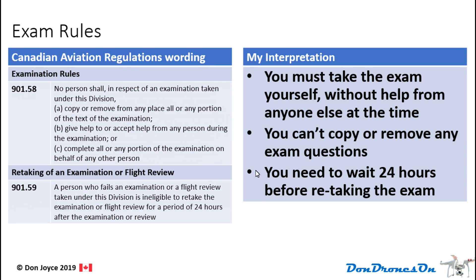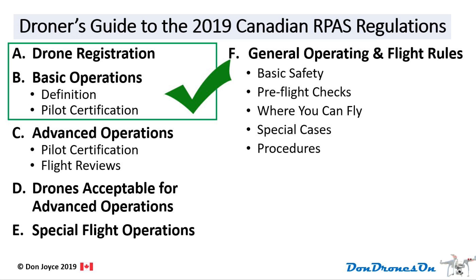When taking the exam, there are some rules — the same for both the basic and advanced exam. You must take the exam yourself without help from anyone else. You can't copy or remove any exam questions. You need to wait 24 hours before retaking the exam if you fail. Every time you take the exam, it costs $10. Those are all of the regulations around drone registration and basic operations activities for drones.